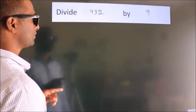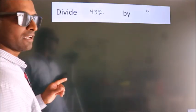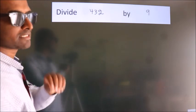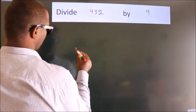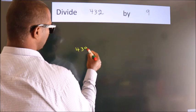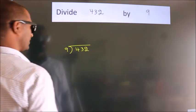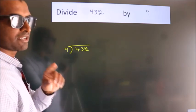Divide 432 by 9. To do this division, we should frame it in this way. 432 here, 9 here. This is your step 1.